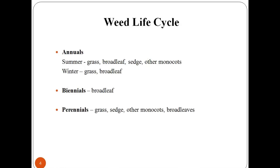Let us look at the weed life cycle. It is important for those who manage lawns and landscapes to understand weed cycle, growth and reproduction. An annual is a plant which germinates, flowers, sets seeds and dies within a single year. All annuals spread only by seeds.